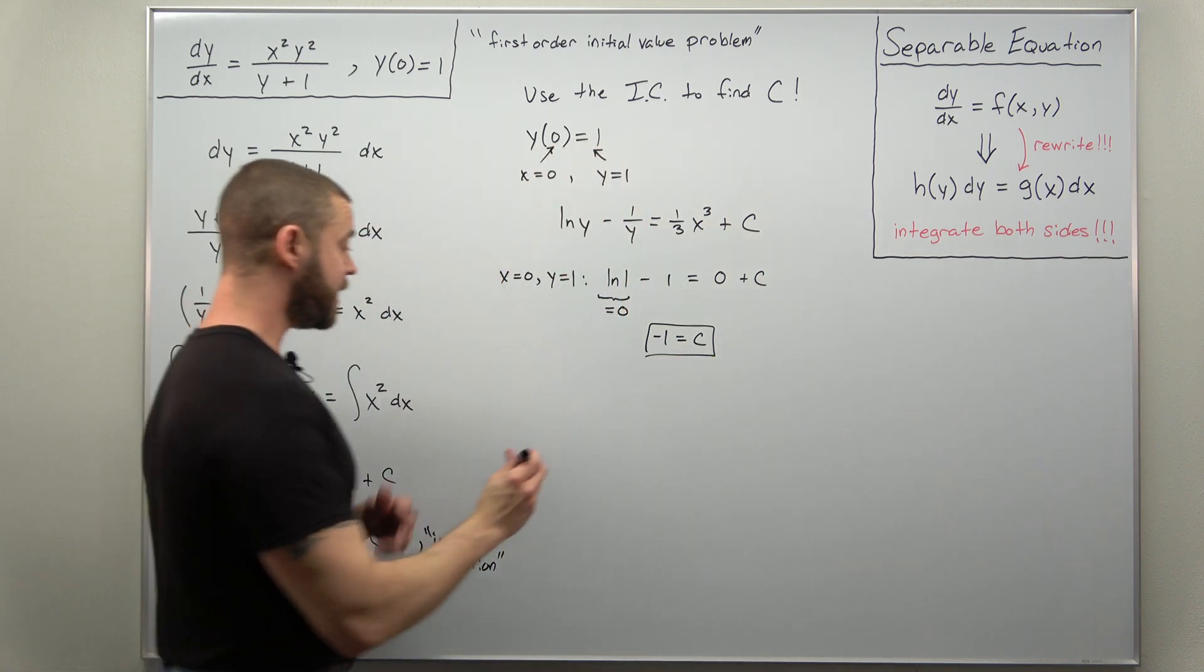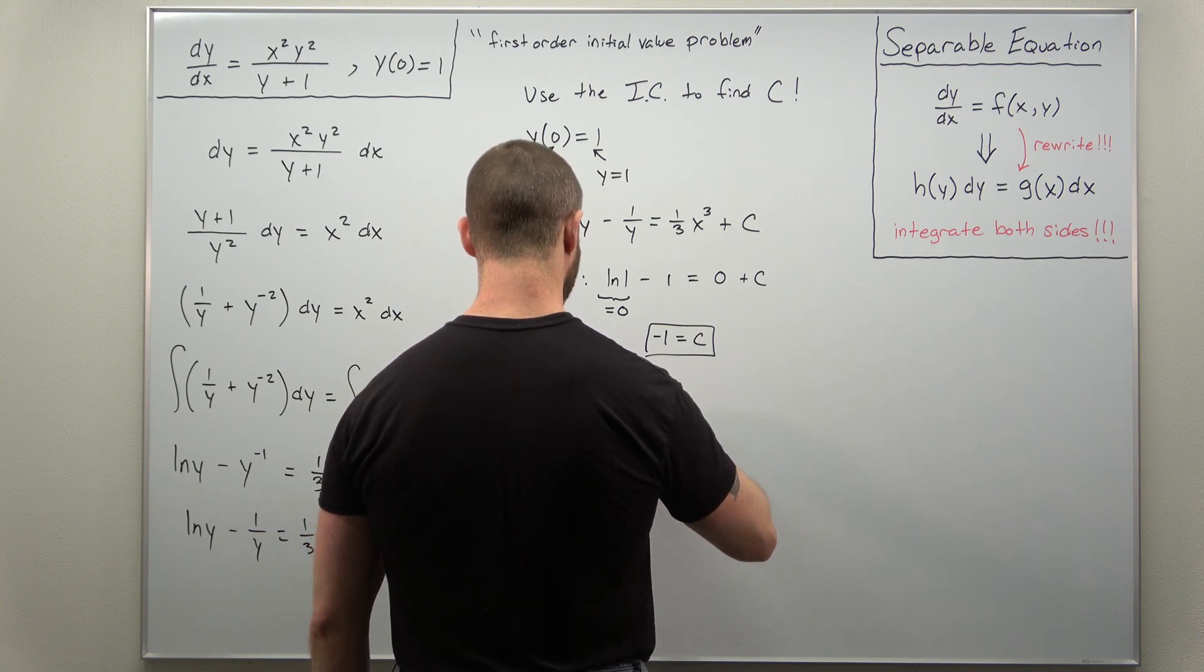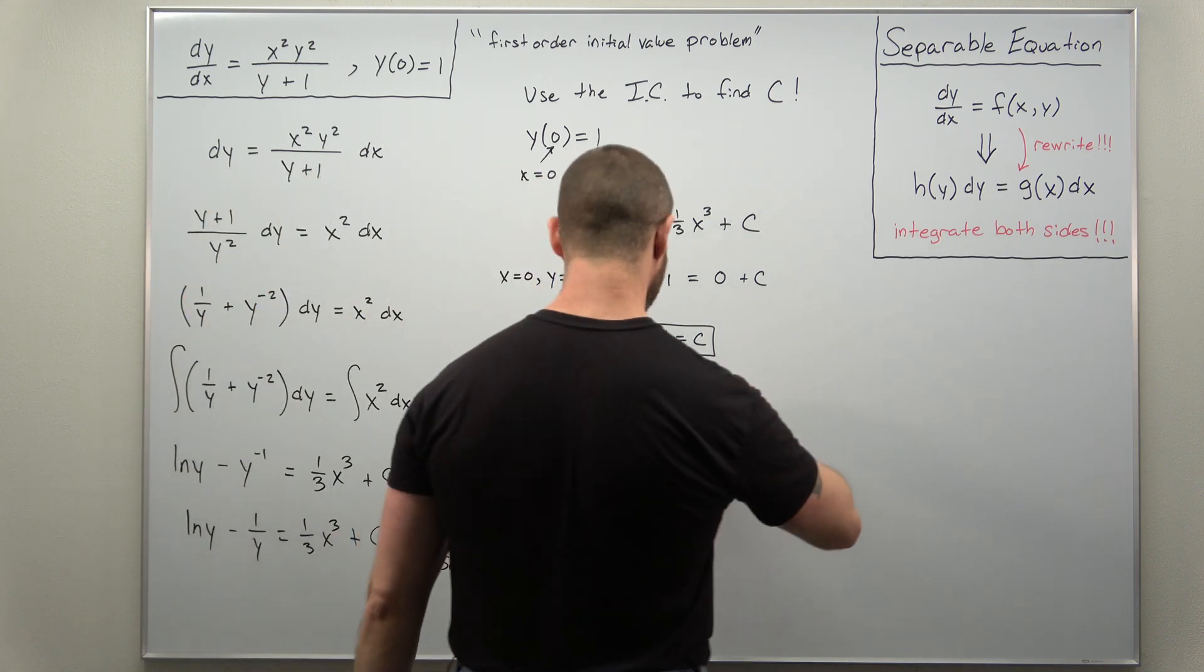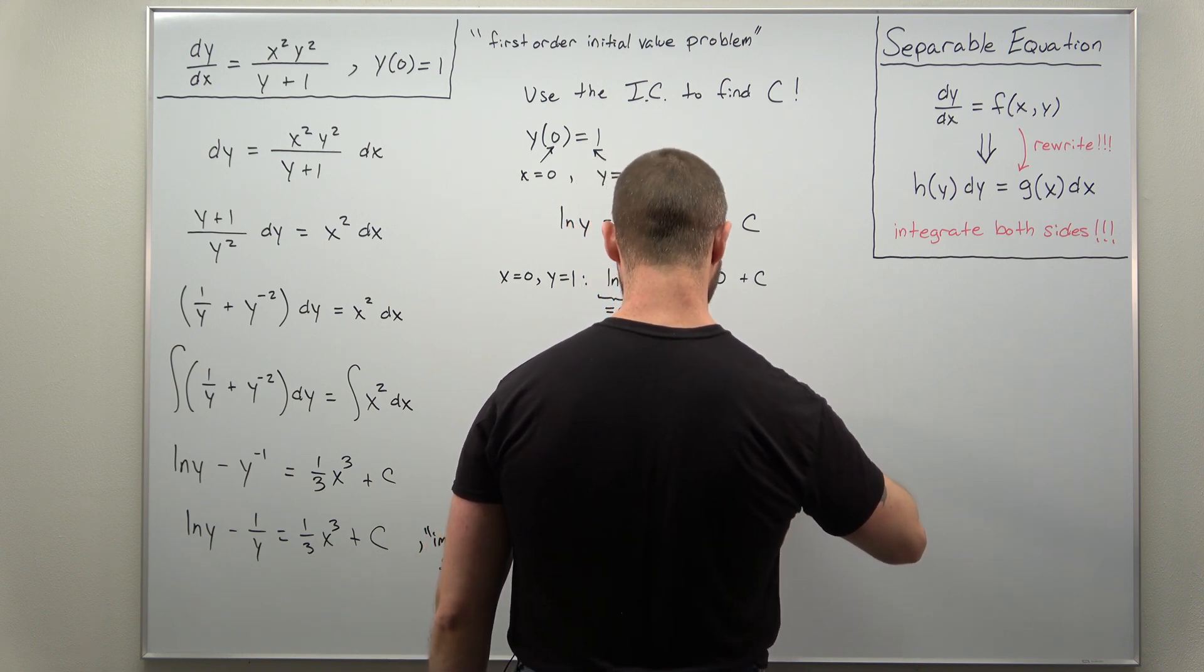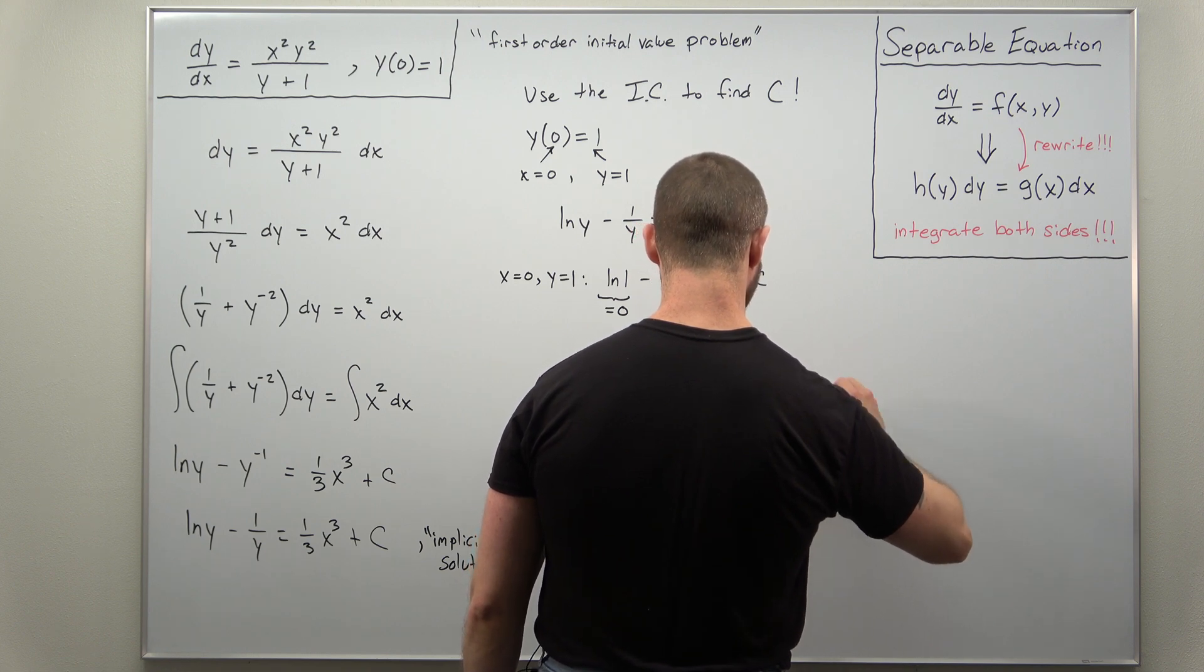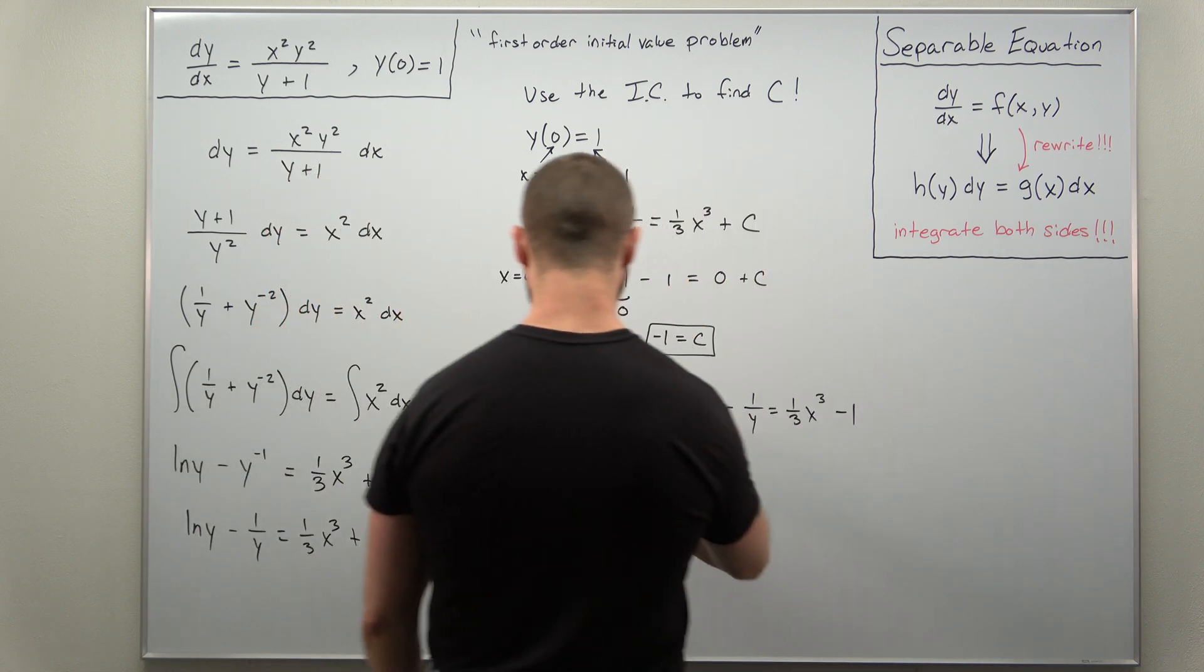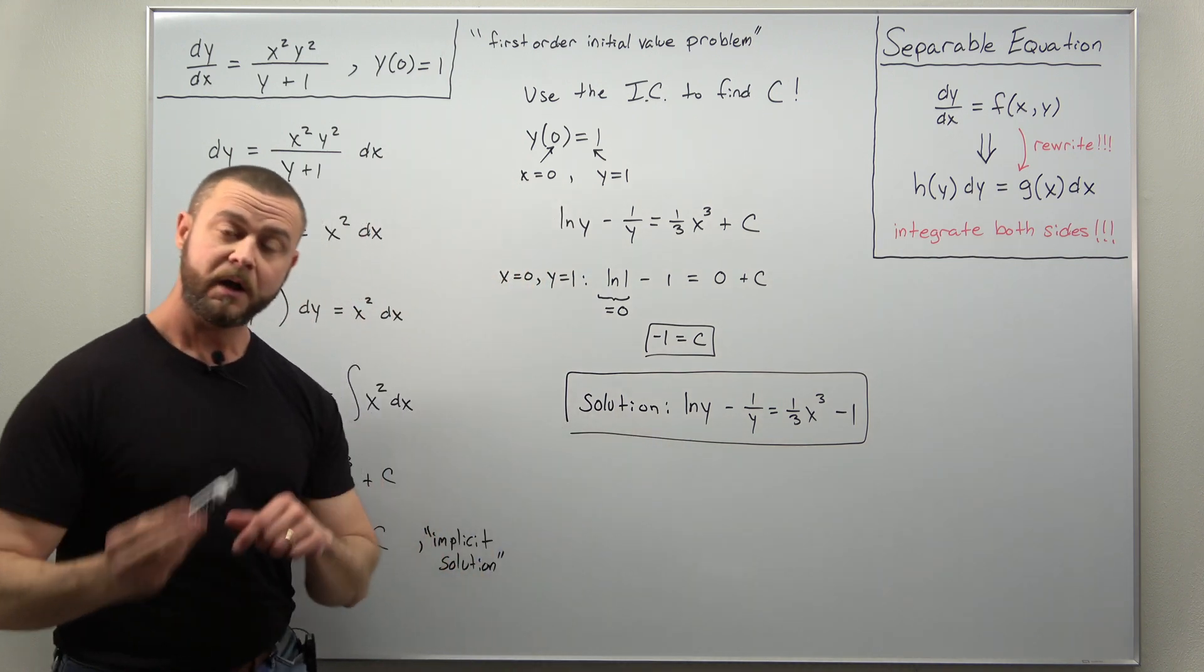So let's just write it down. The full solution where we just basically plug back in our value for c. So we have the solution already that we found natural log of y minus one over y equals one third x cubed. But now we plug back in. We found the value of c was negative one and we just put that there. And there we go.